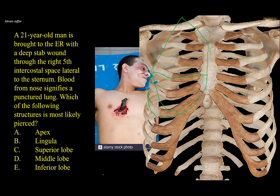Referring to the picture and the site of the stab wound, it is in the fifth intercostal space. Counting from below the first rib: first, second, third, fourth, and fifth intercostal space. So that's the region of the fifth intercostal space, lateral to the sternum, and therefore the stab will be in the middle lobe. It is not in the inferior lobe, not in the superior lobe, not in the apex, and not in the lingula — because the lingula is a feature of the left lung, not the right lung.